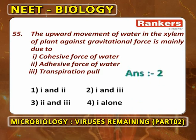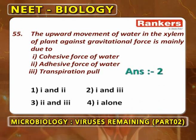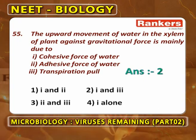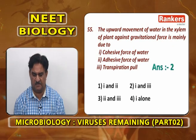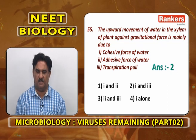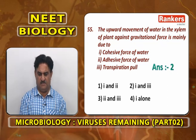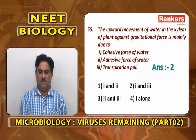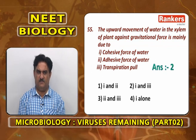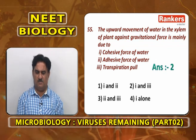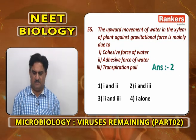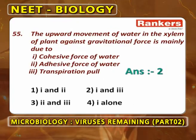The upward movement of water in the xylem of plants against gravitational force is mainly due to cohesion of water molecules and transpiration pull — options 1 and 3. Not as much adhesive force; cohesive force of water and transpiration pull take water to various places. Second option: 1 and 3.